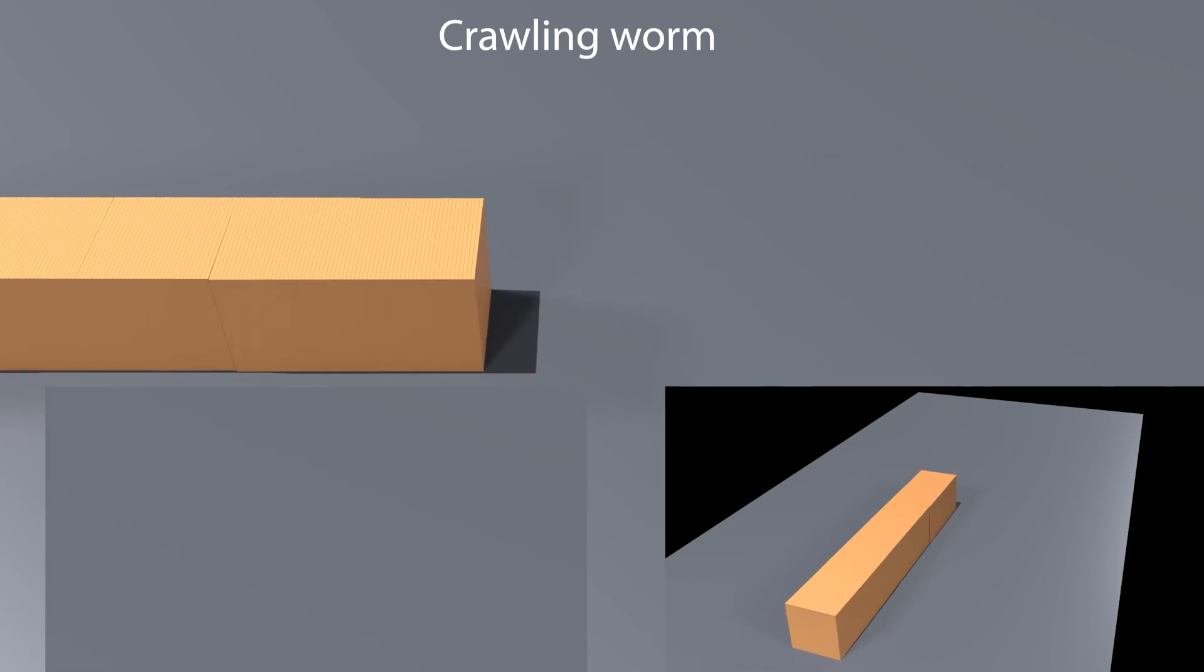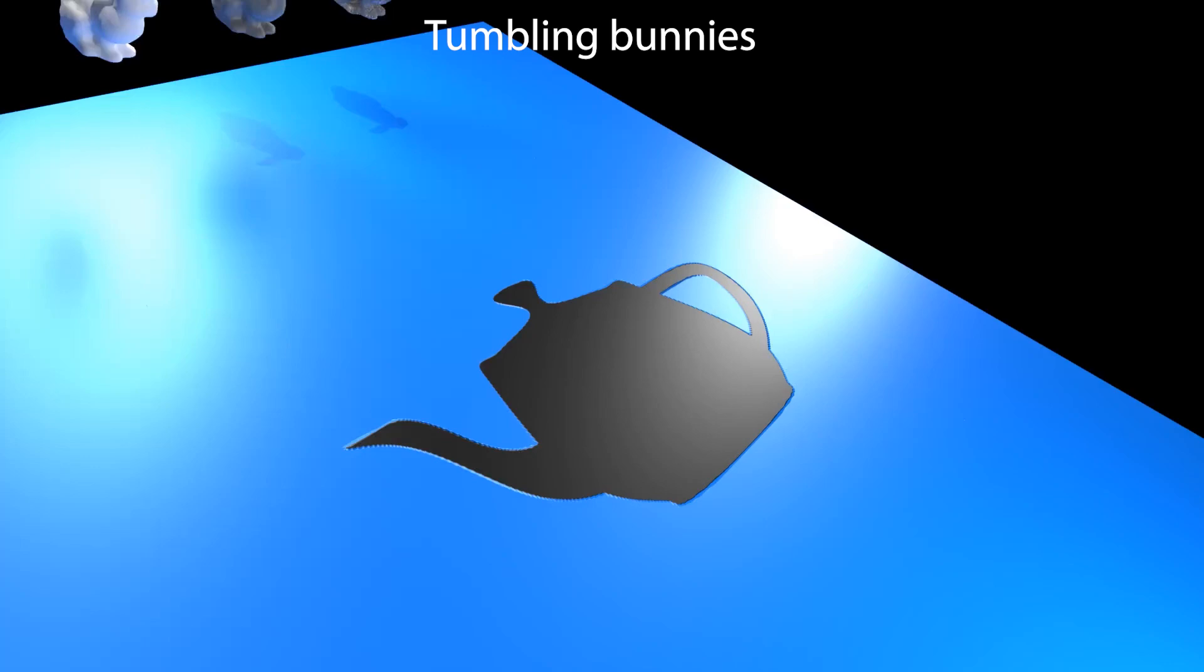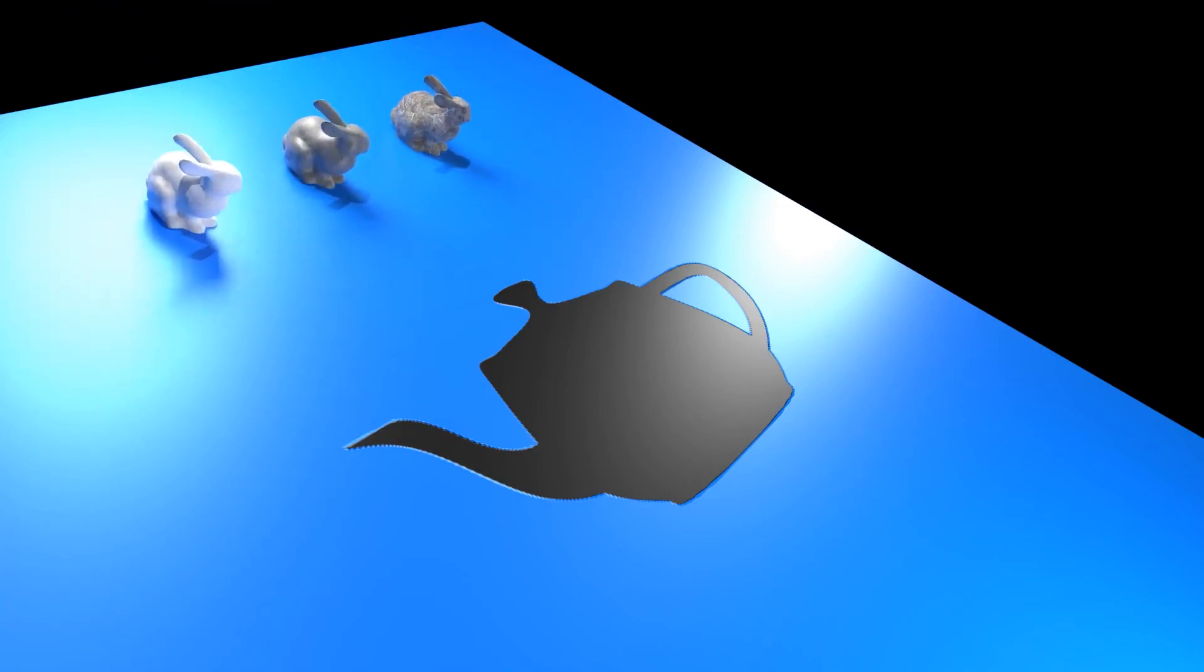This emergent behavior is only possible due to the asymmetric capability of our friction model. In this tumbling bunny example, an inclined plane is embossed with a teapot logo using a normal map to create a thin ridge. The bunnies begin sliding at different rates due to different surface roughnesses, and some of them trip and start to tumble once they reach the ridge.